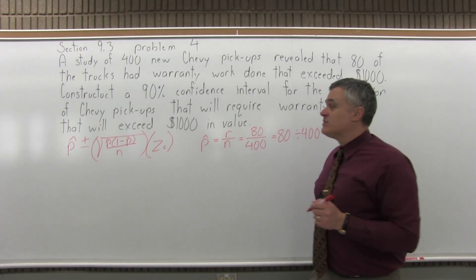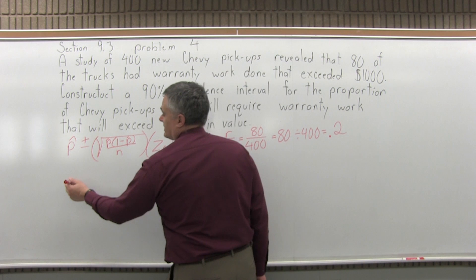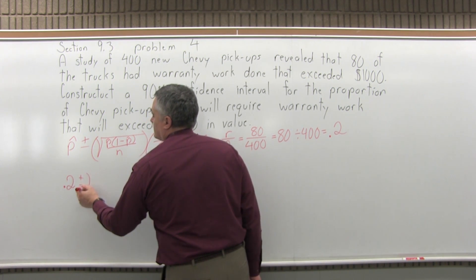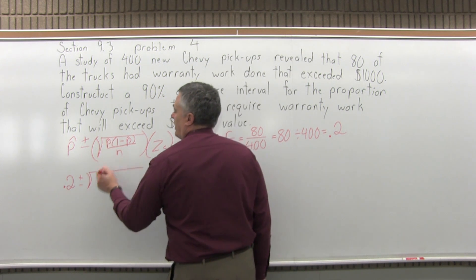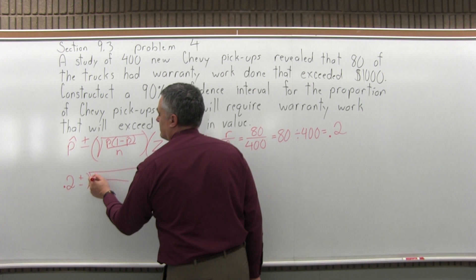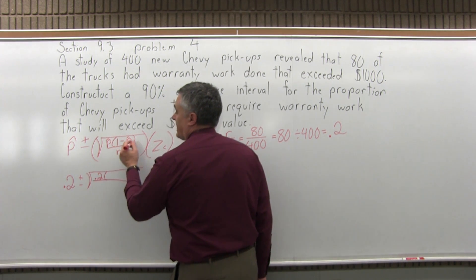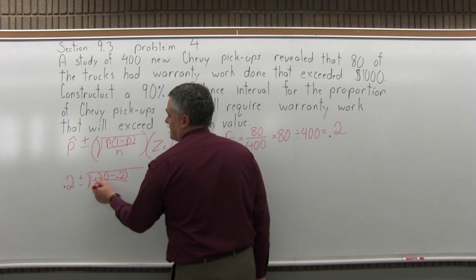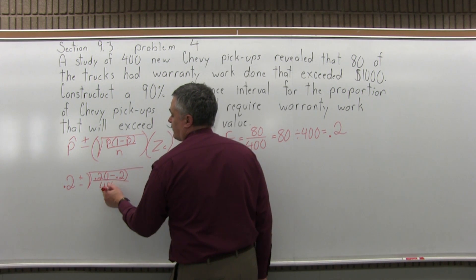So now that we know p-hat is 0.2, let's start filling in our confidence interval formula. So the p-hat will be 0.2 plus or minus the square root of p-hat, so 0.2, times 1 minus p-hat, 1 minus 0.2, over n. n is the size of our sample, so in this case it's 400.